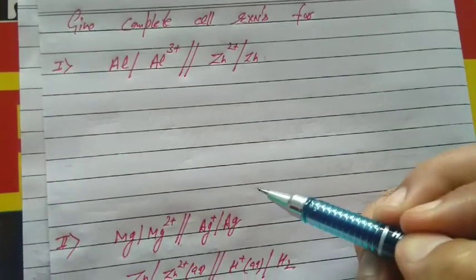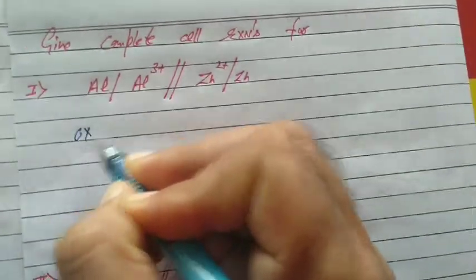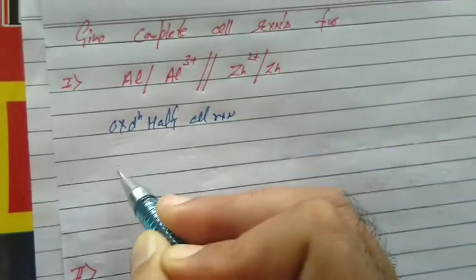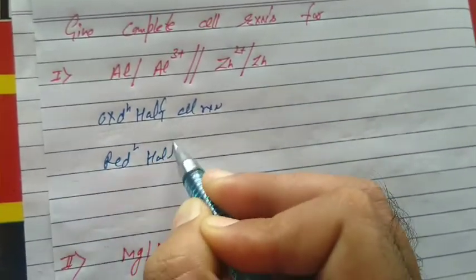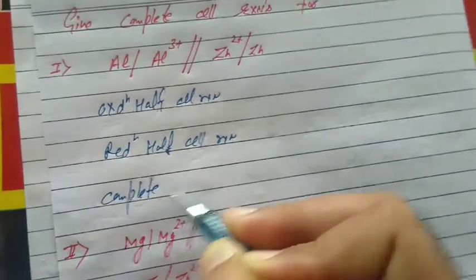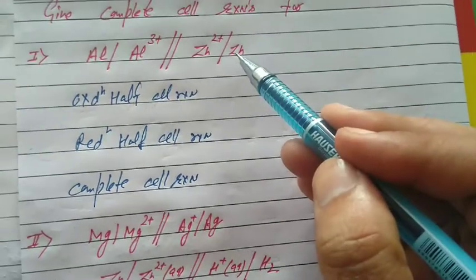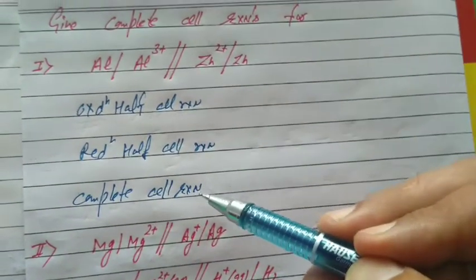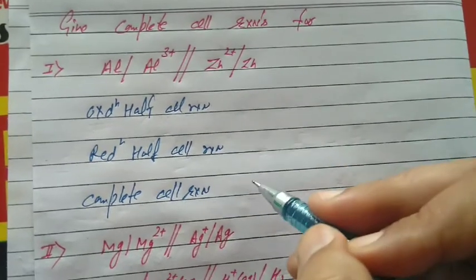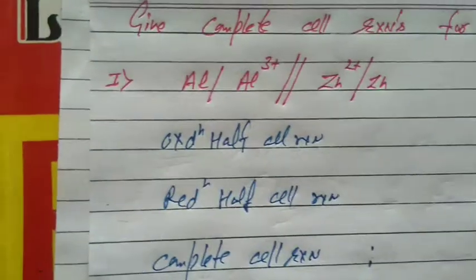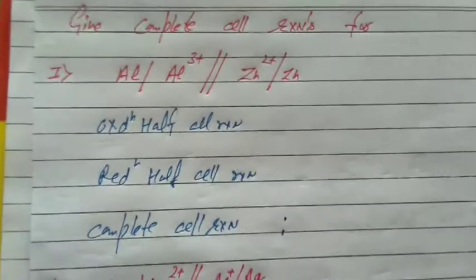Now let's look at complete cell reactions. Given a cell, the demand may be: give the oxidation half-reaction, the reduction half-reaction, and the complete cell reaction. We must know how to write the complete cell reaction; otherwise we cannot do numericals in the Nernst equation, which will be discussed tomorrow.